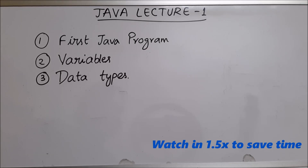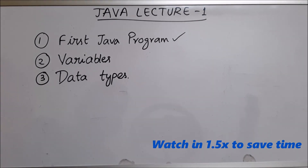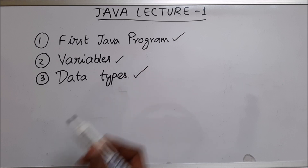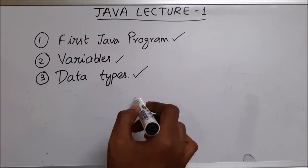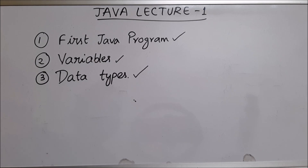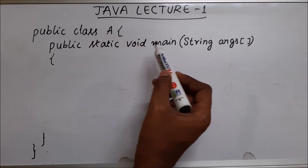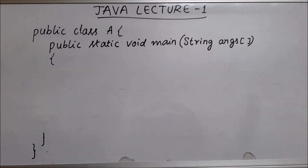Hello, in this Java lecture series I'm going to teach you how to write your first Java program, then we will see what are variables, then we are going to learn about data types. First, I will explain everything on this whiteboard, then I will take it to my laptop and show you the program. Do not worry about the class, this method — all these things I will explain to you in a later session.